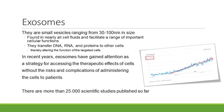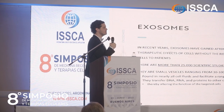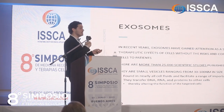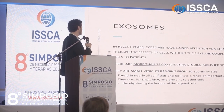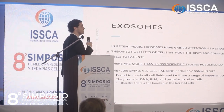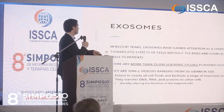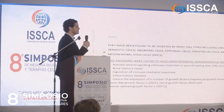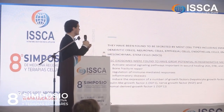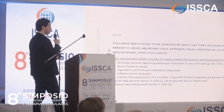In recent years, exosomes have gained attention as a strategy for accessing the therapeutic effects of cells without the risks of complications from fat or bone marrow harvesting. There are more than 25,000 scientific studies published on them so far. They are small vesicles found in nearly all body fluids. They have been found and secreted by most cell types including immune cells, neuronal cells, epithelial cells, endothelial cells, embryonic cells — and even plants secrete exosomes to communicate between cells.